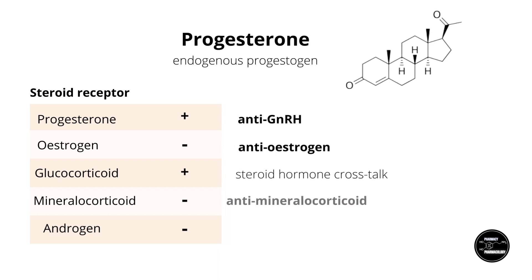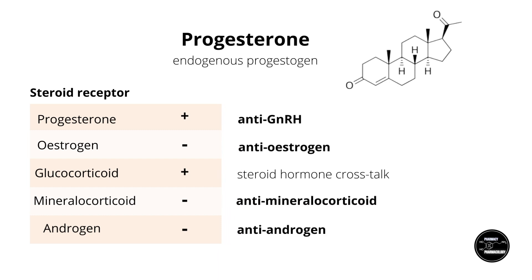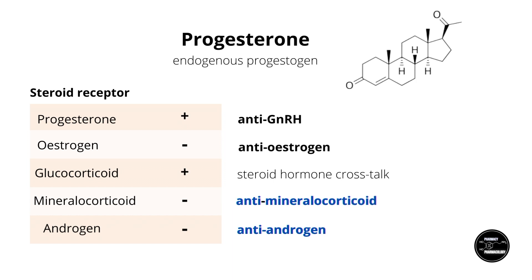As mentioned before, progesterone has an anti-GnRH effect. GnRH is the hypothalamic hormone of the sex hormones, and the anti-GnRH effect is not only exploited in hormonal contraception, but also in treating sex hormone-related conditions — for example, medroxyprogesterone is used for this. Otherwise, I'm going to be focusing more on the anti-mineralocorticoid and anti-androgenic effects, as these two come up the most with regard to hormonal contraceptives.